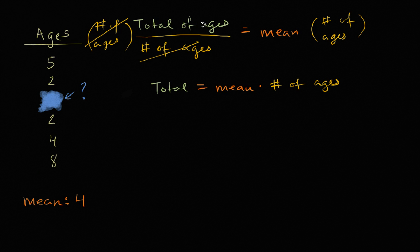So let's go back to the beginning here, just so that this makes sense with some numbers. The total of ages, that's going to be five plus two plus question mark plus two plus four plus eight. We're going to divide by the number of ages. Well, we have six ages here. Six ages.